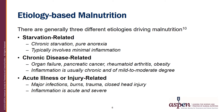Chronic disease-related malnutrition is typically seen in chronic organ failure, such as chronic obstructive pulmonary disease or end-stage renal disease, or in pancreatic cancer, rheumatoid arthritis, or obesity. Inflammation in this type of malnutrition is chronic and generally of mild to moderate degree.